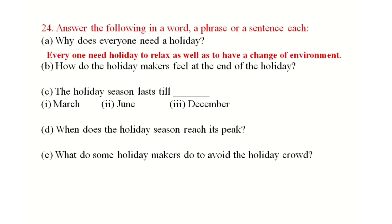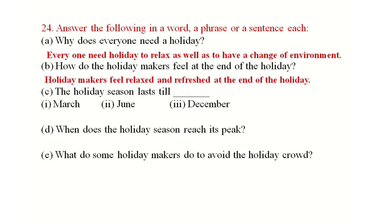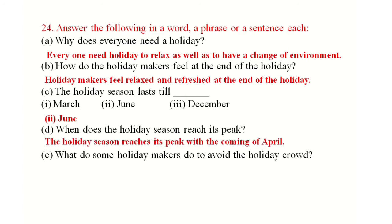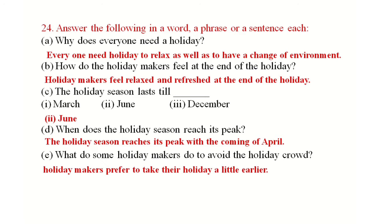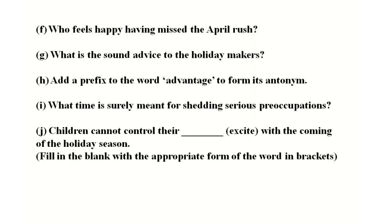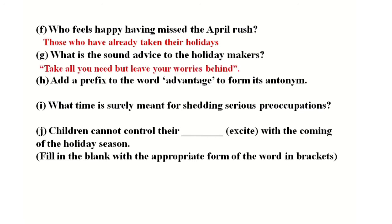How do the holiday makers feel at the end of the holiday? Answer: Holiday makers feel relaxed and refreshed at the end of the holiday. When does the holiday season last? Answer: June. When does the holiday season reach its peak? Answer: The holiday season reaches its peak with the coming of April. What do some holiday makers do to avoid the holiday crowd? Answer: Holiday makers prefer to take their holiday a little earlier. Who feels happy having missed the holiday rush? Answer: Those who have already taken their holidays feel they have missed the April rush.